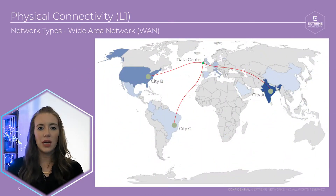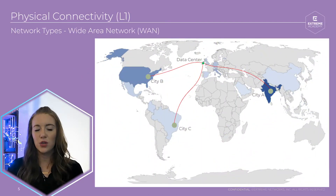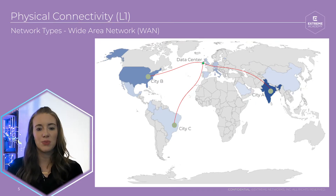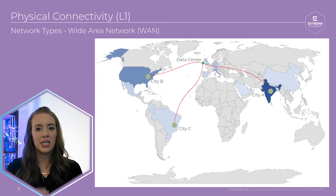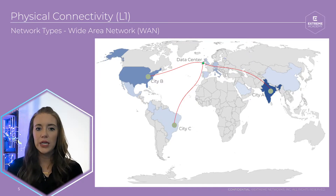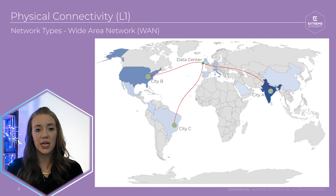Lastly, we have our largest type of network. A WAN, or a wide area network, is a network that's spread across a large geographical area. It could be a town, a city, a state, or across multiple countries. A WAN is made up of LANs, CANs, and MANs.